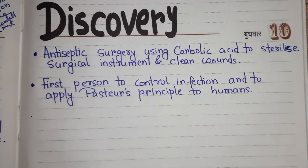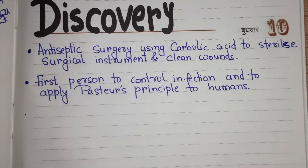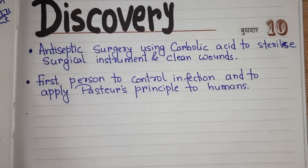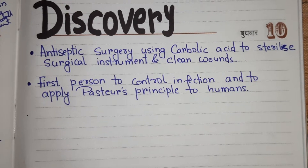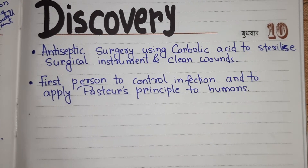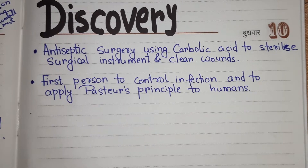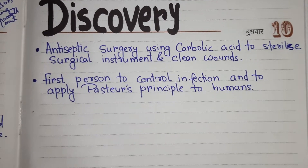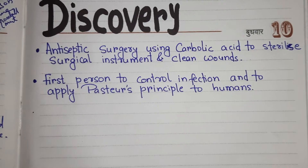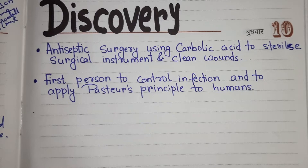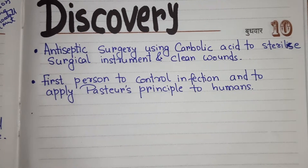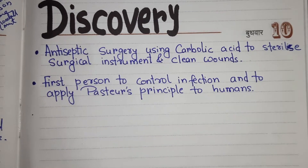Surgery before Lister was very dangerous, and the high death rate made many people suggest it should be stopped. Patients often died from ward fever, which was caused by infections after surgery. Since people didn't have much idea about sterilization, they didn't sterilize the instruments used in surgery.